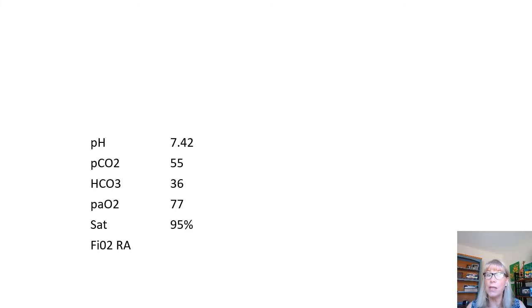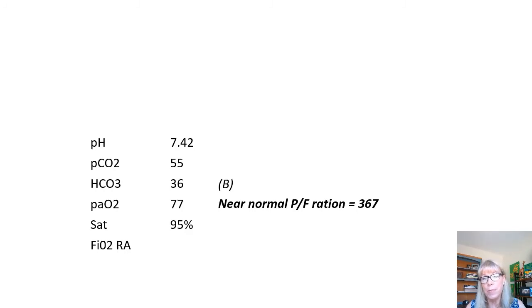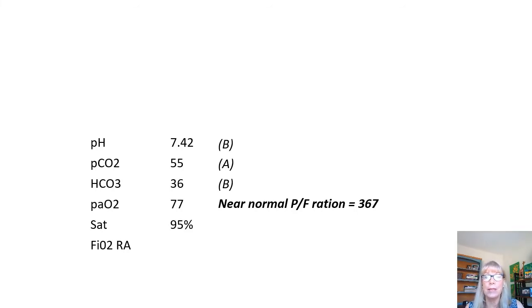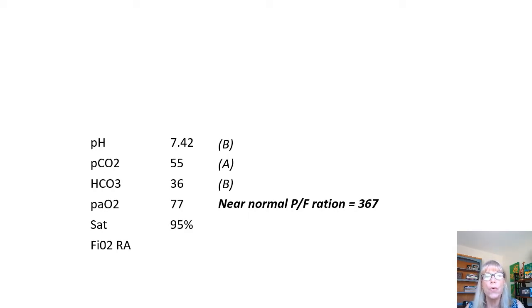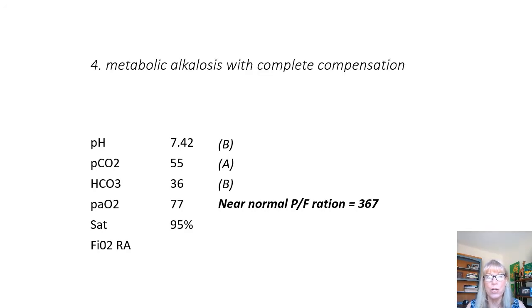Number four: O2 is 77, O2 sat is 95, on room air — normal, near-normal PF ratio. Now the two parameters: bicarb is in the base range — pretty high — and CO2 is in the acid range, so the lungs are holding on to some CO2. But the pH is in normal range, leaning towards alkalosis, so we put a B by that. We line up our Bs — metabolic alkalosis — but the pH is in normal range. The CO2 is compensating, the lungs are compensating. This is a completely compensated acid-base picture: a metabolic alkalosis with respiratory compensation and complete compensation.